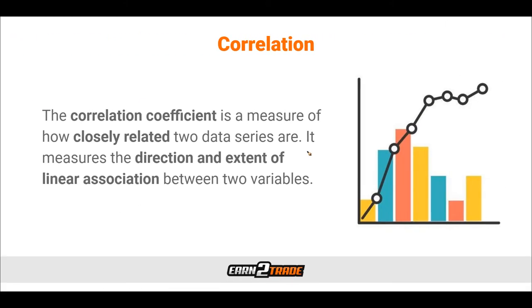A key variable in portfolio diversification is correlation. The correlation coefficient is a measure of how closely related two data series are — it measures the direction and extent of linear association between two variables. Positive linear association occurs when the coefficient is greater than zero; negative when it is less than zero. The coefficient can have a maximum value of one and a minimum of negative one. Investing in securities with low or no correlation helps in constructing a diversified investment portfolio.